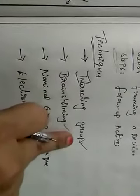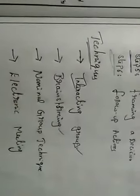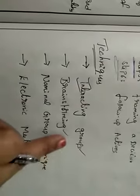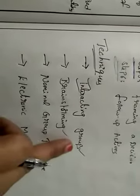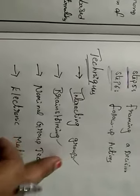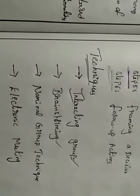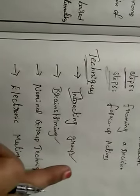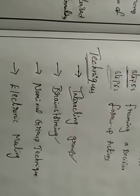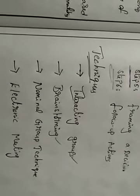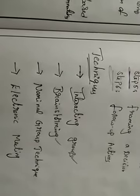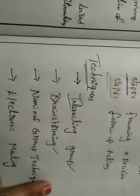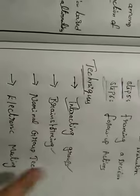The first technique is interacting groups. In group decision making, interacting with groups plays the most important role. Each and every person interacts with each other. Group members meet each other personally and utilize verbal and non-verbal communications for group development.